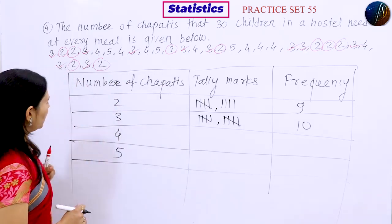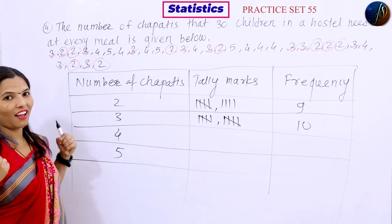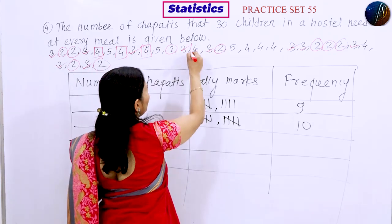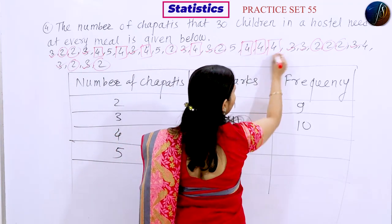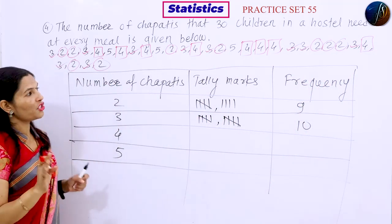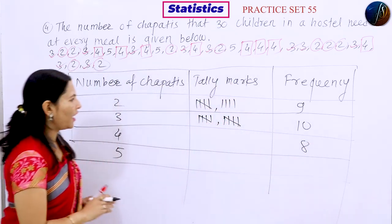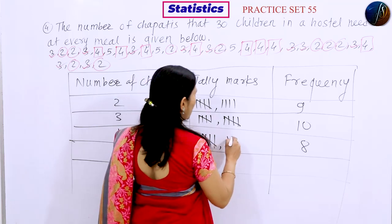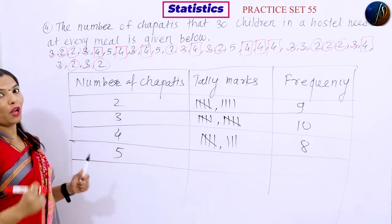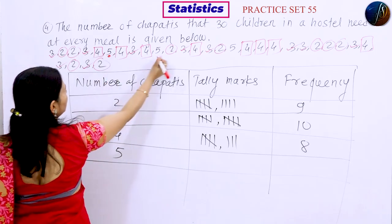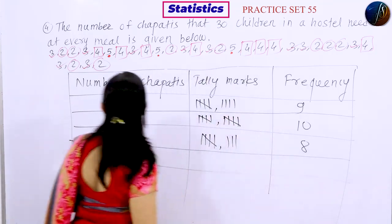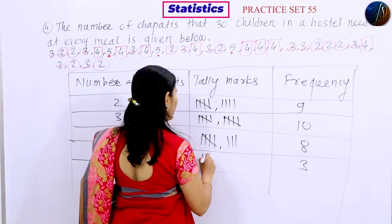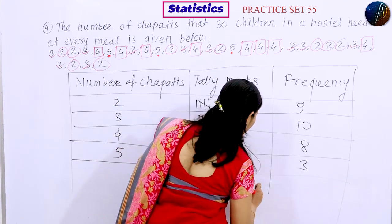For 4 chapatis, we count: 1, 2, 3, 4, 5, 6, 7, 8 — so 8 students eat 4 chapatis. Then 1, 2, 3, 4, and 5 in groups gives 5, and then 1, 2, 3 more — so frequency is 3. For 5 chapatis, the count gives frequency 3 as well. The last column frequency entries are now complete.